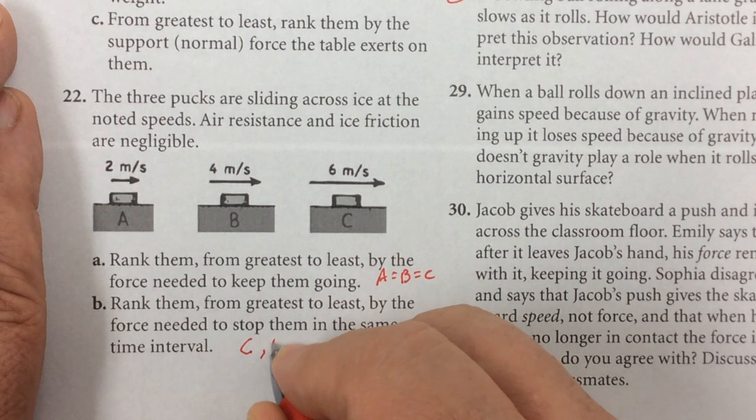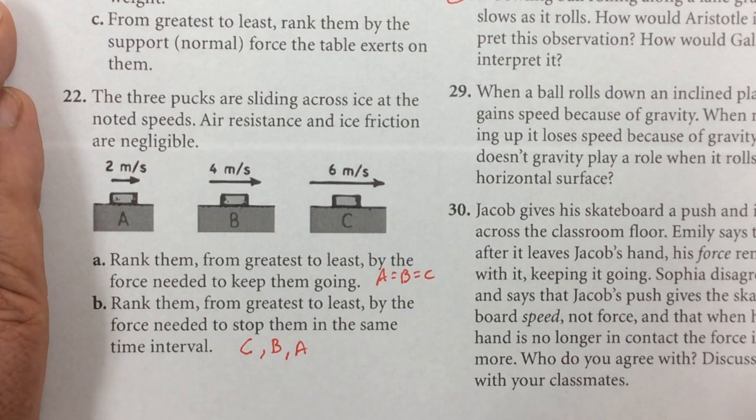I would say it's harder to stop C. Then next harder it would be B and then the easiest to stop would be A because it's going the lowest speed.